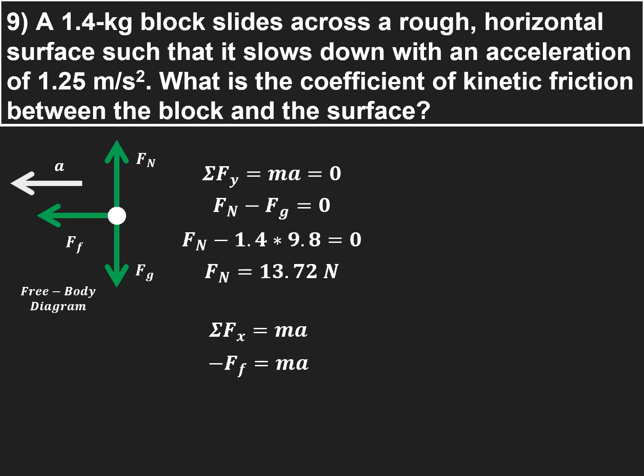The mass is given to be 1.4. The acceleration, now you've got to be careful. With the acceleration, it's 1.25 meters per second squared, but it is in the negative direction. It's slowing the object down. So as it's moving to the right, the object is slowing down, which means the acceleration has to be to the left, meaning negative. So those two negatives are actually going to cancel. You get 1.4 times 1.25, and that gives you 1.75 newtons for the force of friction.